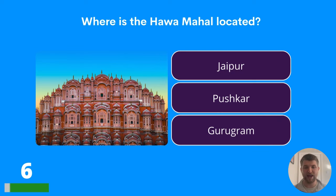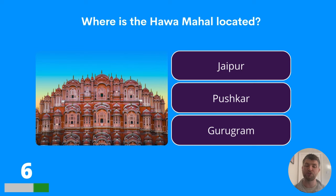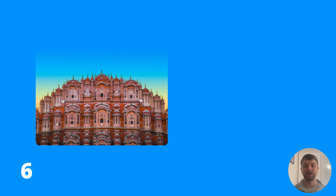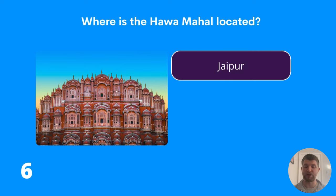Question six: where is the Hawa Mahal located? Is it in Jaipur, Pushkar, or Gurugram? The answer is Jaipur. Well done if you got that one right.